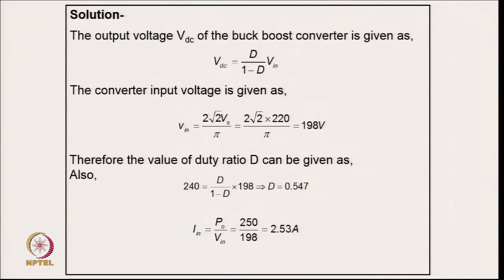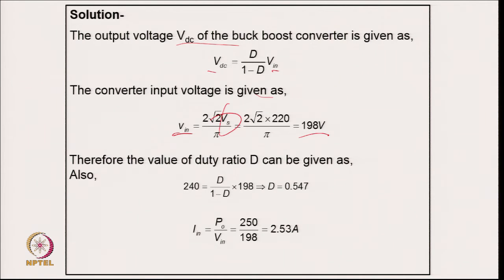Coming to the numerical part: the output voltage of the buck-boost converter is V_dc = (D / (1 - D)) × V_in, where V_in is the average output of the diode rectifier, calculated in terms of the supply RMS voltage. Putting in the values gives V_in = 198 V.